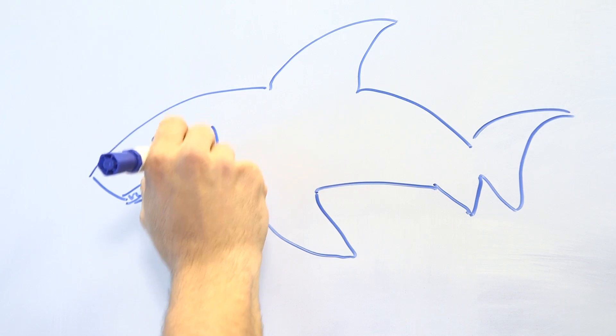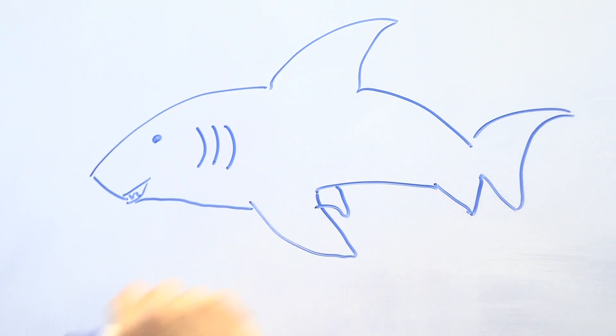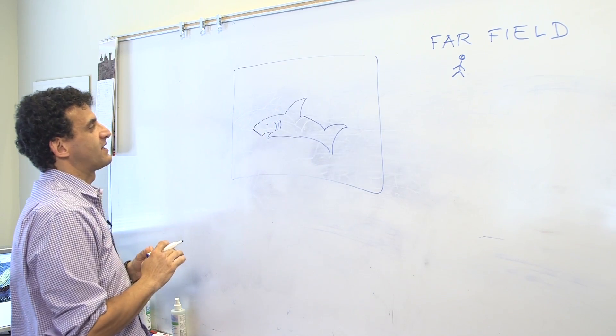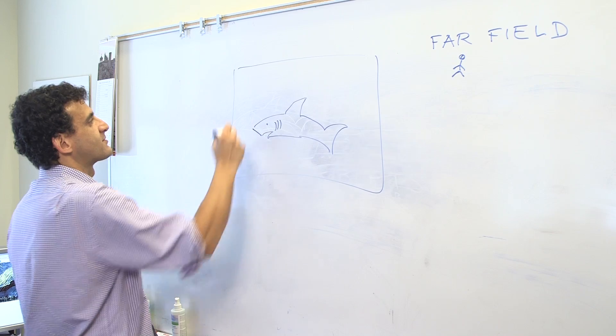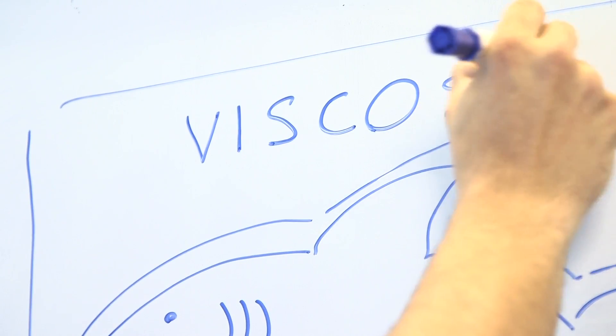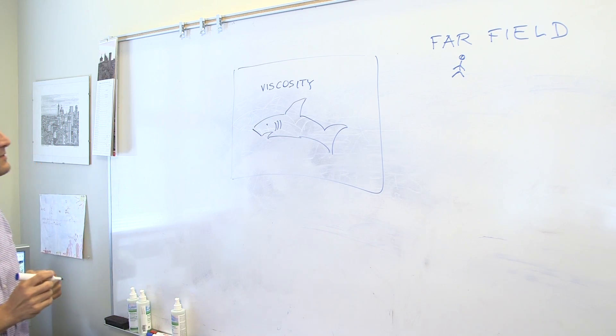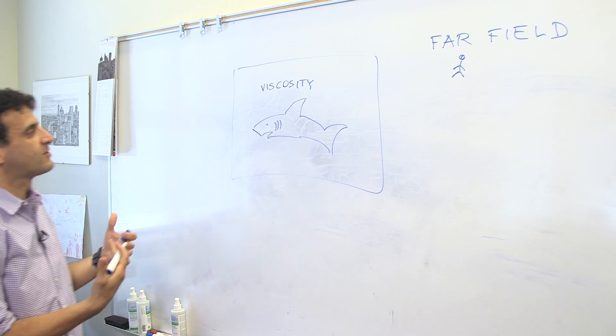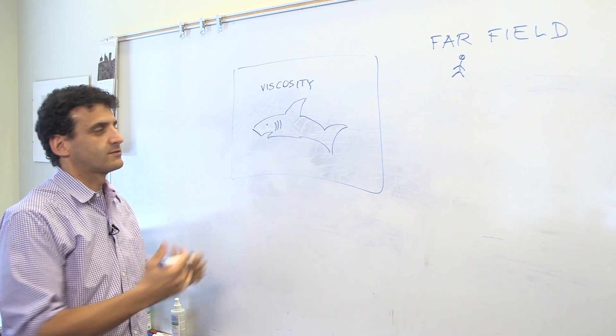When we have a shark in the water, in this region around the shark there is another dynamics related to what we call the water viscosity. So the water viscosity is responsible of resistance of the water to the swimming.